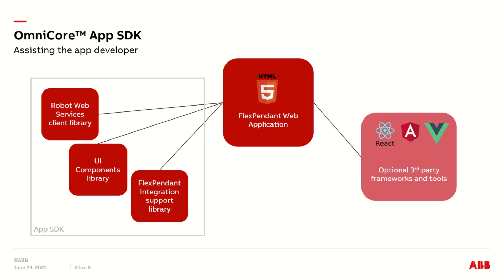First, there is a Robot Web Services client library for JavaScript, which hides a lot of the complexity of using Robot Web Services directly. Second, there is a UI components library, which can be used for creating UI widgets similar in look and feel to those used natively within the FlexPendant shell. Both the Robot Web Services client library and UI components library can also be used in web apps running on external web browsers such as laptops, tablets or smartphones. And last, there is a FlexPendant integration support library, which can be used for interaction with the FlexPendant shell itself. An example of this would be to receive notification that the app is now shown on the screen or hidden in the background.